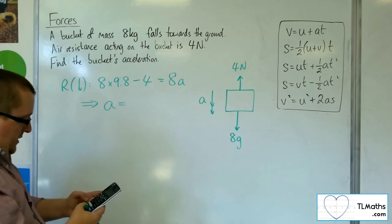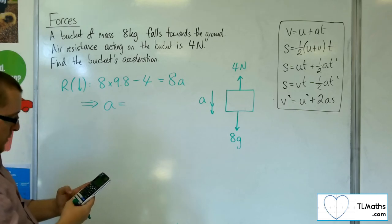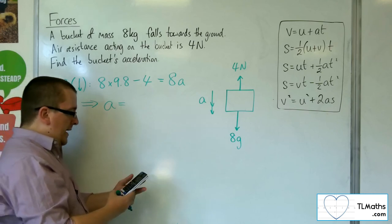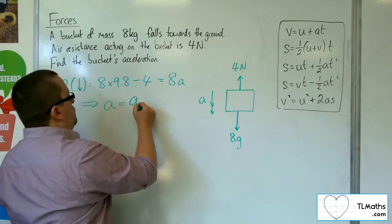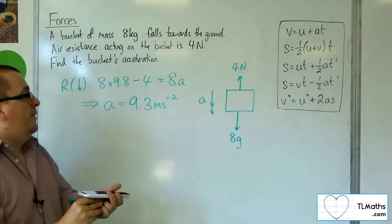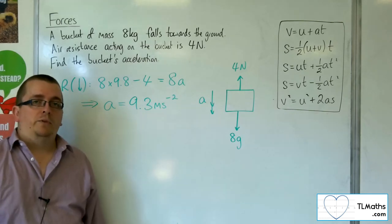So we've got 8 times 9.8, take away 4, which is 74.4. Divide that by 8, and we get 9.3. So the acceleration of the bucket is 9.3 meters per second per second.